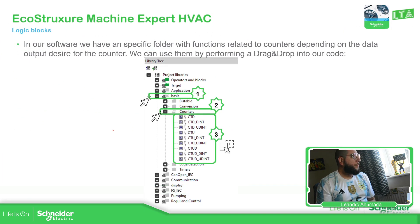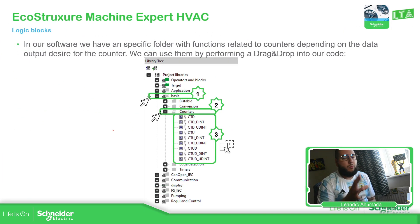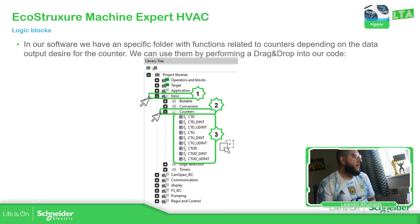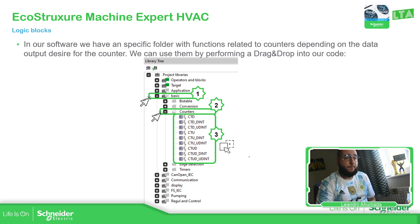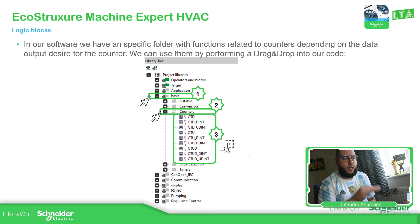Let's start with the counters. So in the new version of EcoStruxure Machine Expert HVAC, we have inside the basic and counter folders all the different counter types that we have in the software. So basically we have counter down, counter up, and counter up and down all together.